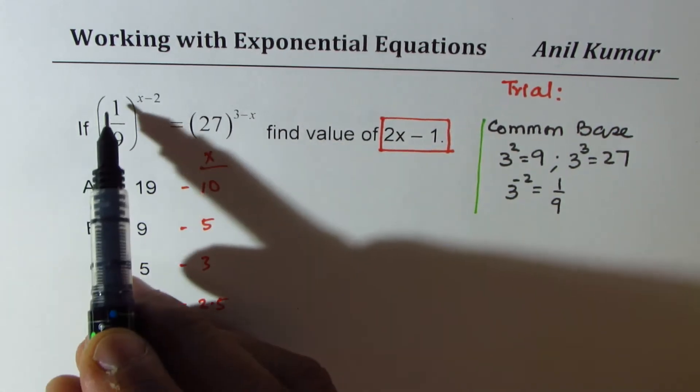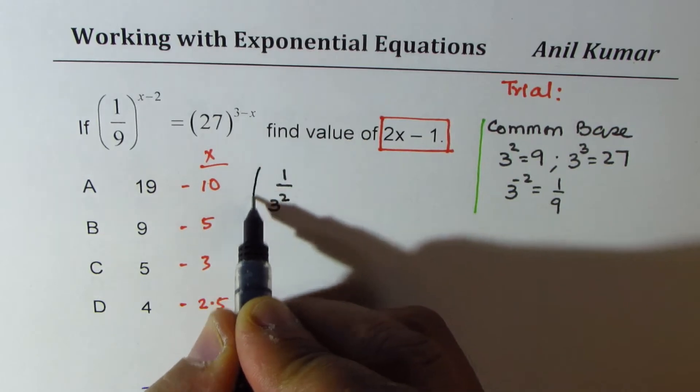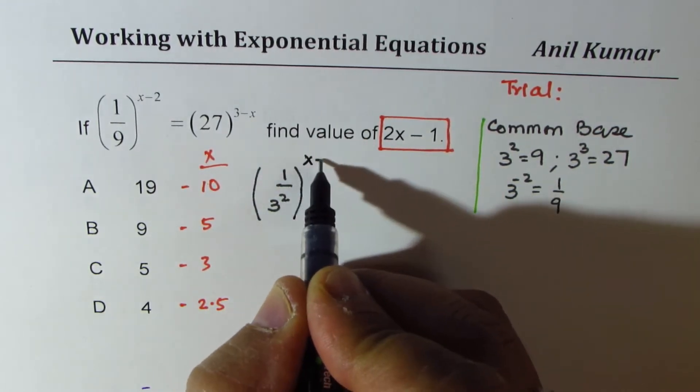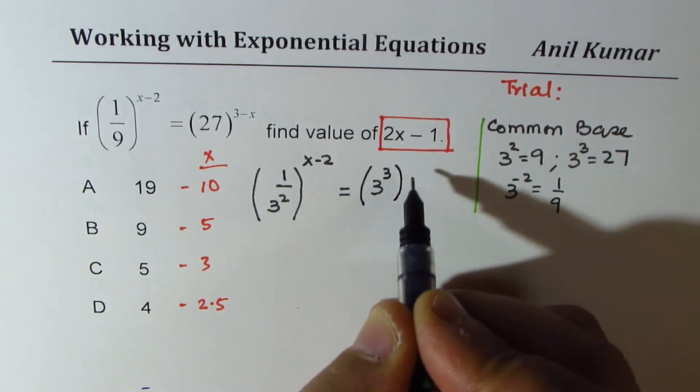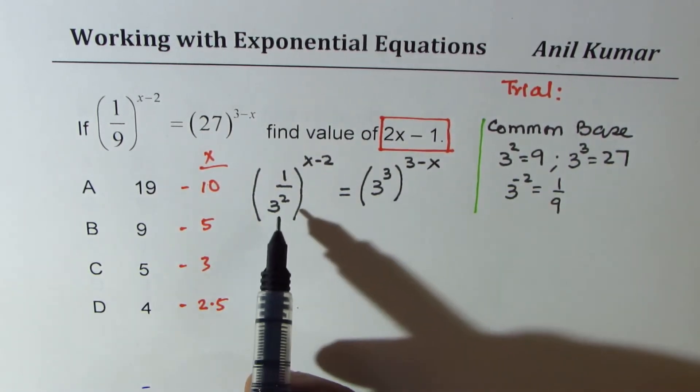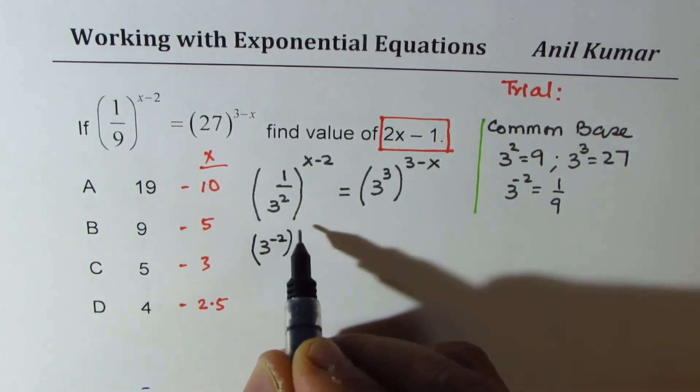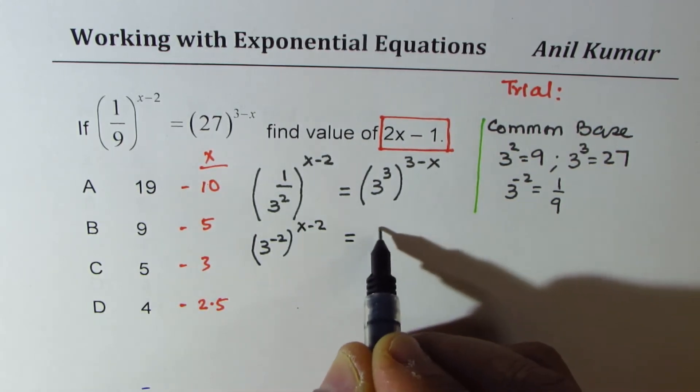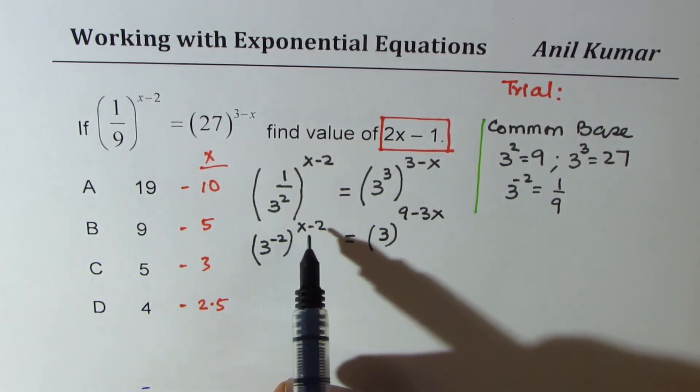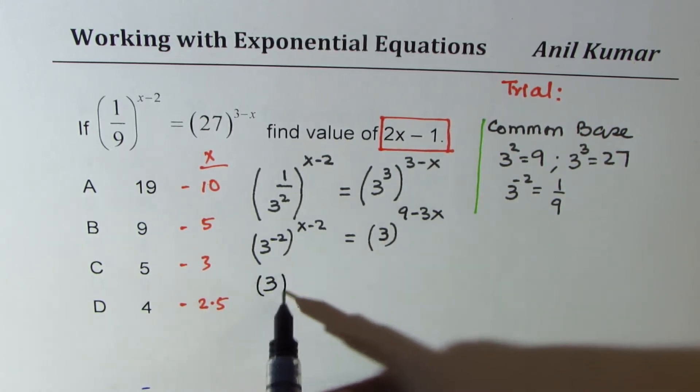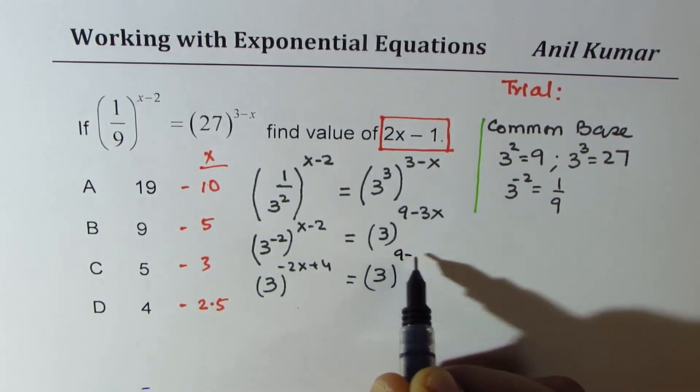So let's rewrite our equation. 1 over 9, I am writing as 1 over 3 squared first, for the benefit of most students. And we have x minus 2. And then we have 27 is 3 cubed, 27 to the power of 3 minus x. Now clearly, this gives you 3 to the power of minus 2, x minus 2 equals to 3 to the power of 3, 3 minus x. So if you do that, we get 3 to the power of minus 2x plus 4 equals to 3 to the power of 9 minus 3x.